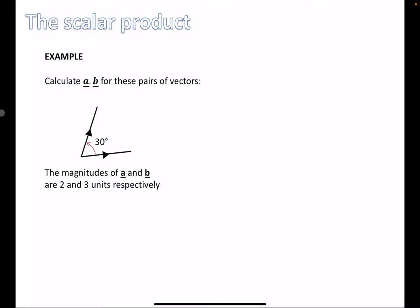For this first example, we want to calculate a·b where the magnitudes of a and b are two and three units respectively. We can literally just put this straight into the formula because we know the angle. a·b = |a| × |b| × cos(θ). The magnitude of a is two, the magnitude of b is three, and the angle between them is 30°. cos(30°) = √3/2, so we can simplify that to 6√3/2, or three root three.